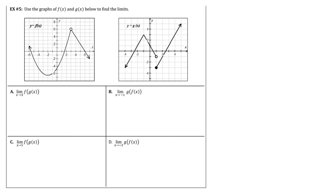Now looking at our graphs. We're going to say the limit as x approaches 3 of G of x — that's the first thing we do. That limit as x approaches 3 of G of x should give us 1. Then we come back and say F at 1: the actual function's value at 1 should be negative 2.